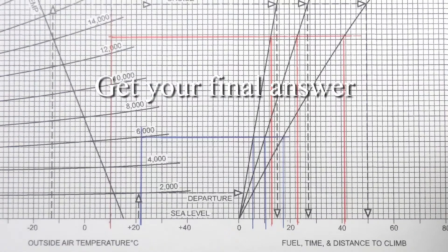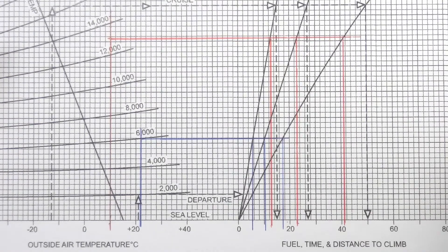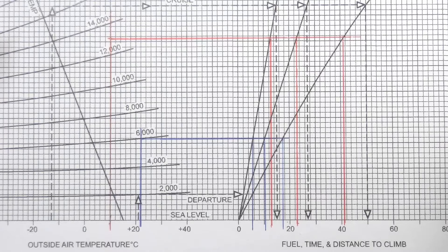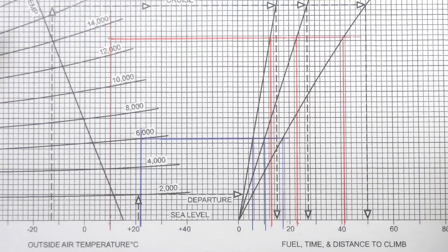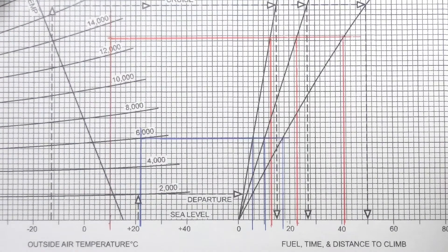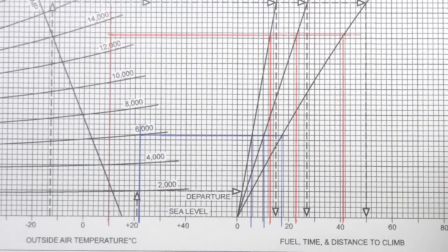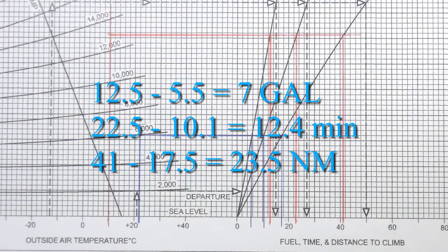So let's take 12 and a half minus five and a half gallons, 22 and a half minutes minus 10.1 minutes, and 41 nautical miles minus 17.5 nautical miles. And that would give us our fuel time and distance to climb of 7 gallons, 12.4 minutes and 23 and a half nautical miles.